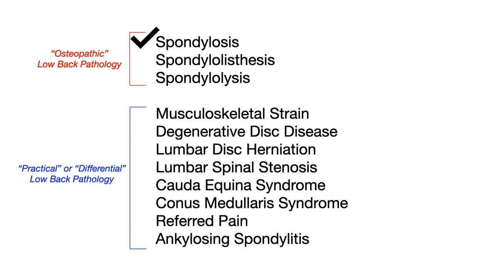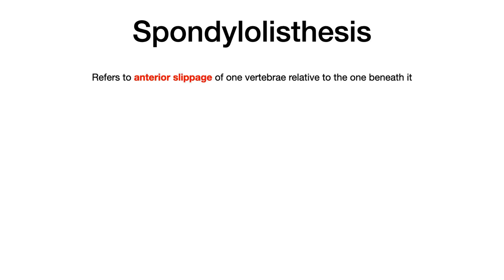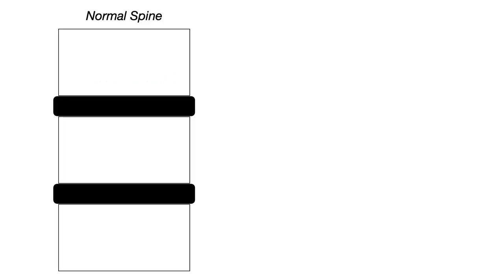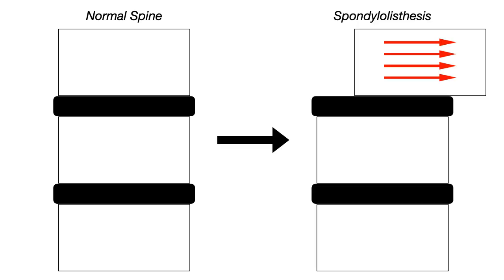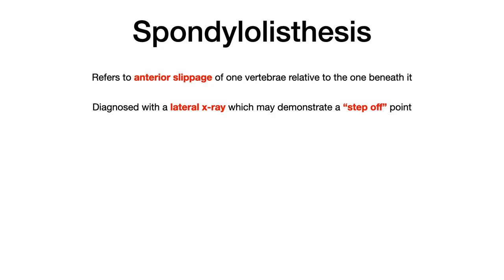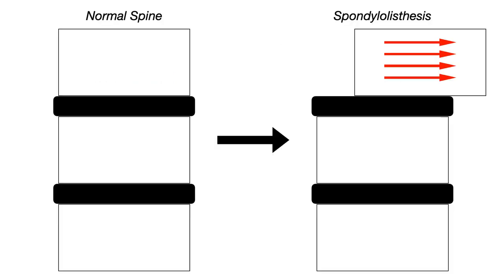Next we're going to talk about spondylolisthesis, which refers to anterior slippage of one vertebra relative to the one beneath it. Going back to the normal spine shown on the left part of this slide, spondylolisthesis happens when one vertebra slips forward, depicted by the red arrows. Spondylolisthesis is diagnosed with a lateral X-ray because looking anterior or posterior you might not be able to detect the anterior slippage occurring in the same plane of vision.